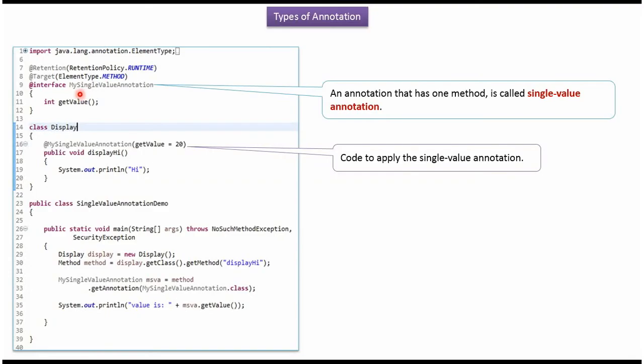Here I have defined the annotation called mySingleValue annotation. It has one method called getValue. If an annotation has only one method, then it is called a single value annotation.